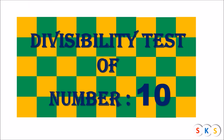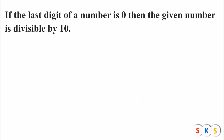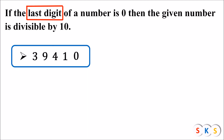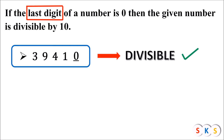Divisibility test of number 10. If the last digit of a number is 0, then the given number is divisible by 10. Is this number divisible by 10? Look at the last digit of this number. What is it? It is 0. If the last digit of any number is 0, then the given number is divisible by 10. So, the given number is divisible by 10.